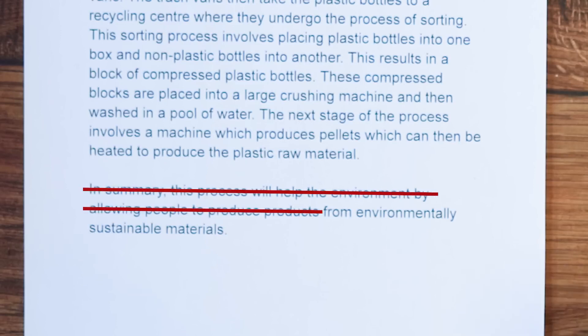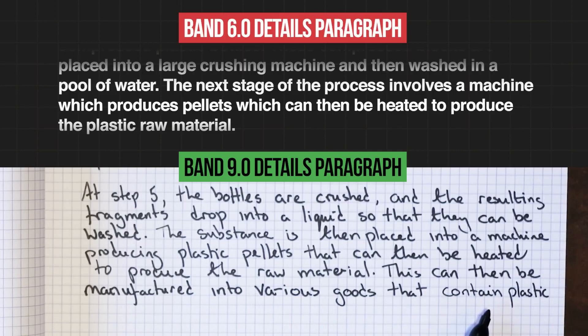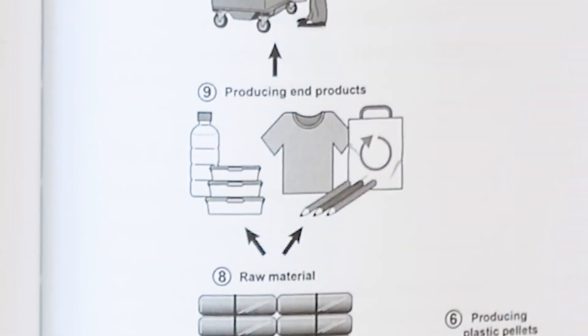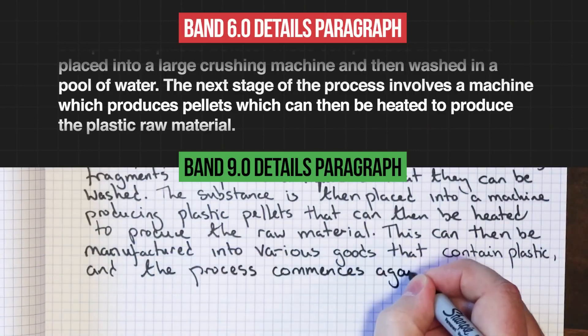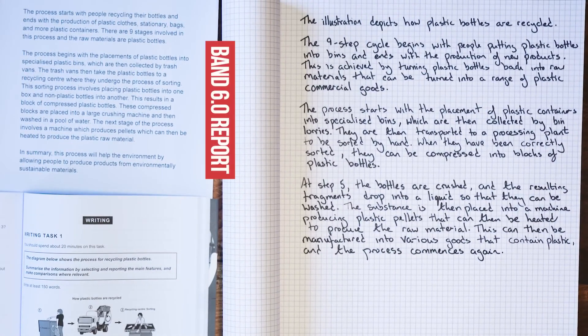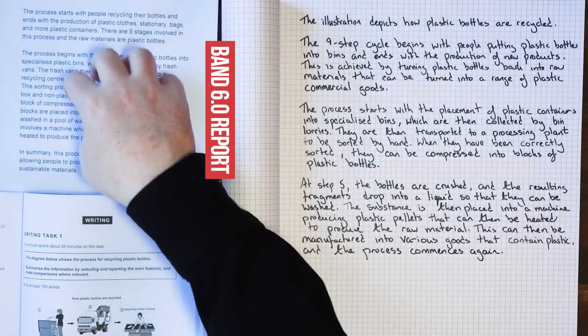I'm sorry for criticizing teachers, but it just shows you that this student really should have got a band eight or nine. Their grammar, their vocabulary, their organization are all pretty good — they know exactly what to do — but they're being hindered by paying for that inexperienced teacher. So what we do is delete the conclusion completely and go back to doing what we should do: just explain what's happening in the process. 'This can then be manufactured into various goods that contain plastic.' I've kept it vague because the products include things like t-shirts and bags and pencils — not 100% plastic. So 'various goods that contain plastic.' And then, because it's a cycle, the process commences again. That's quite simply how to transform a band six with basic mistakes into a band nine report.